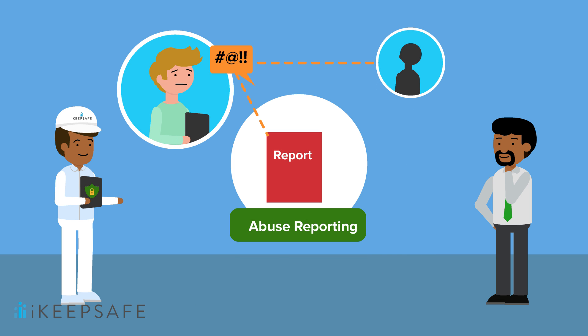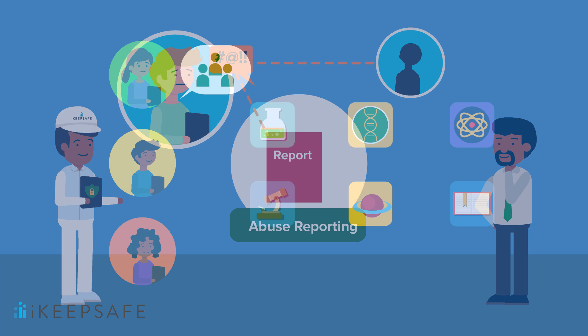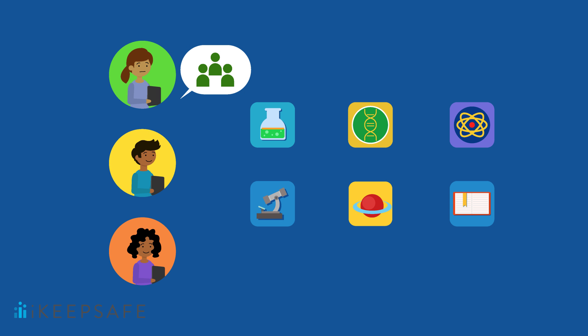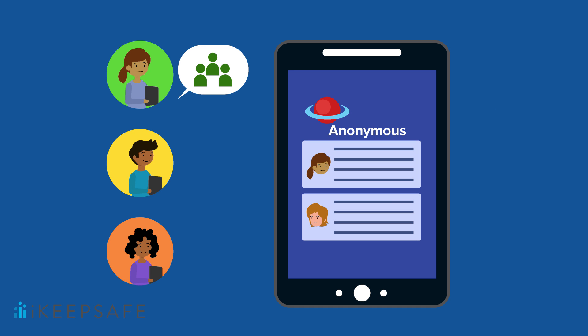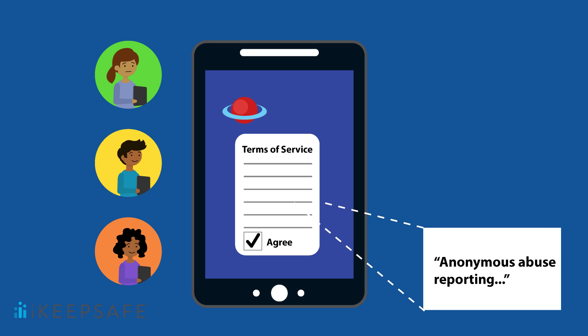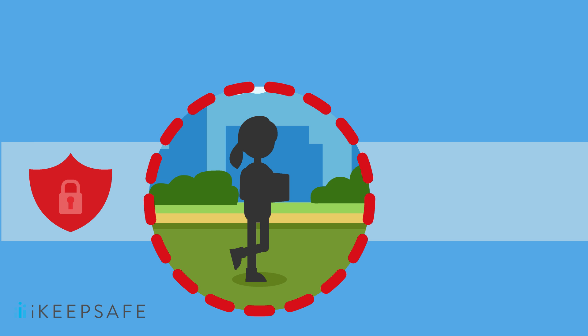Abuse reporting is another means of enforcing safe content and communication. On many digital platforms, social reporting is used as a moderation technique. This allows for users to anonymously report other users who have violated the terms of service through bullying, harassment, posting inappropriate content, and more. If users can communicate or generate content, you should check the terms of service to make sure there's an anonymous abuse reporting mechanism. It is best to make sure that any abuse reporting service preserves the anonymity of the reporter.